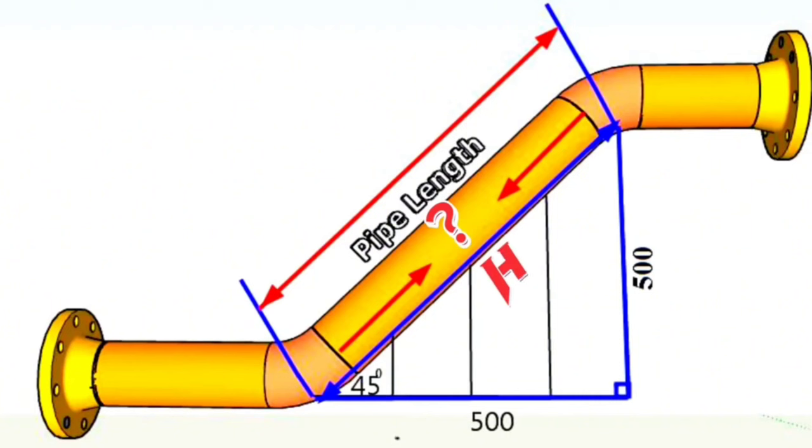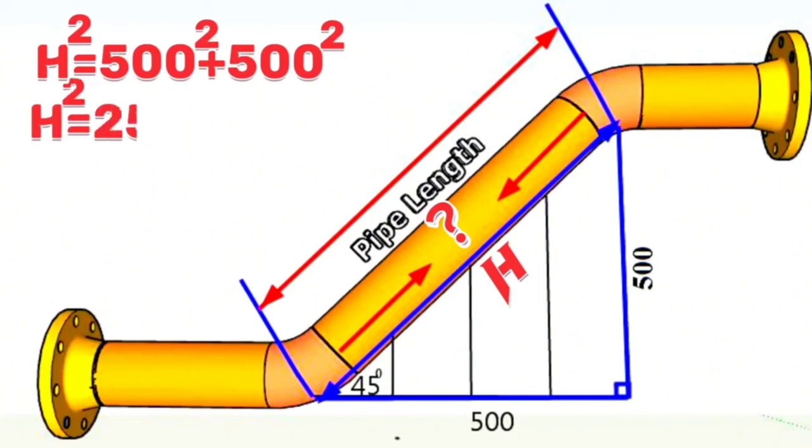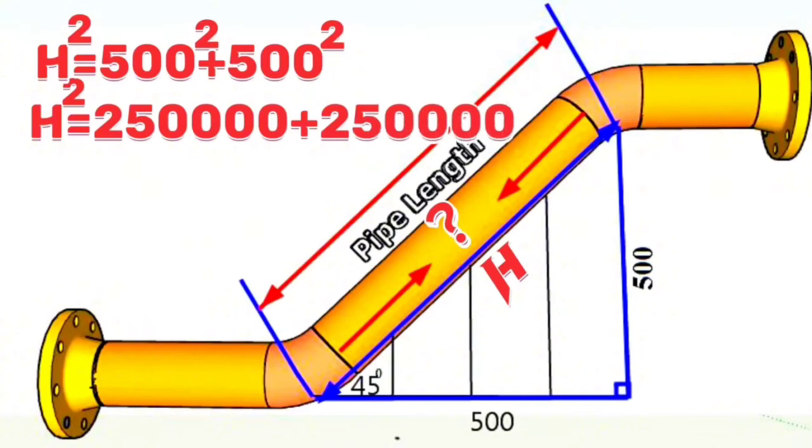We continue the calculation. The square of h is equal to 250,000 plus 250,000. We continue the calculation again. The square of h is equal to 500,000.